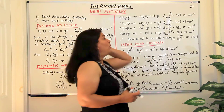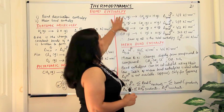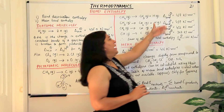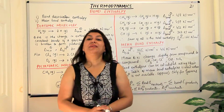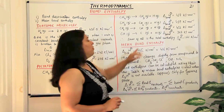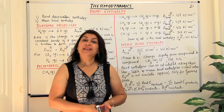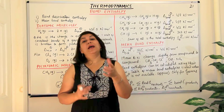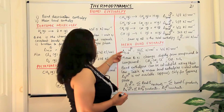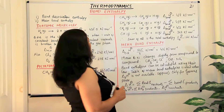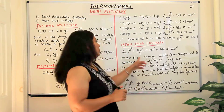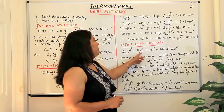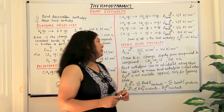We call it the mean bond enthalpy. If these are the four bond enthalpies obtained for methane, we find the sum of all four and divide by four to get the mean — that is the average. So mean bond enthalpy, when you have many bonds of the same kind in the same molecule, is the mean value used in calculations. The mean bond enthalpy of C-H bonds in methane is 1665 divided by 4, which equals 416 kJ per mole.